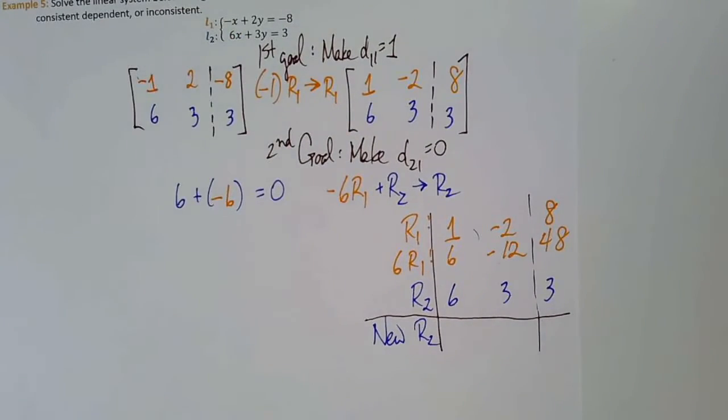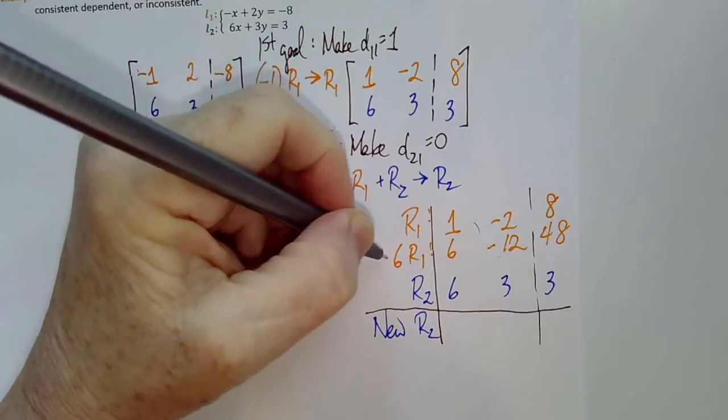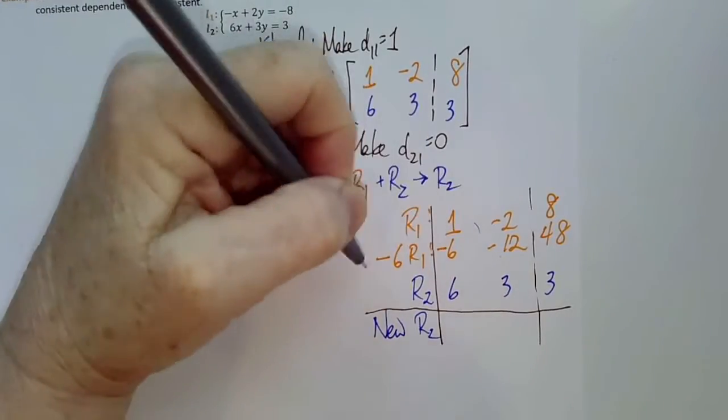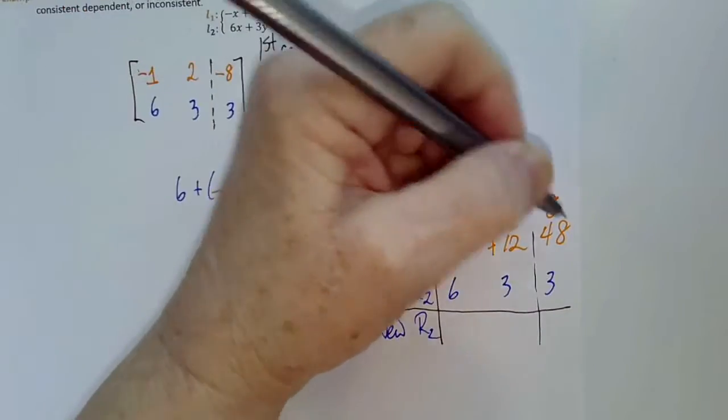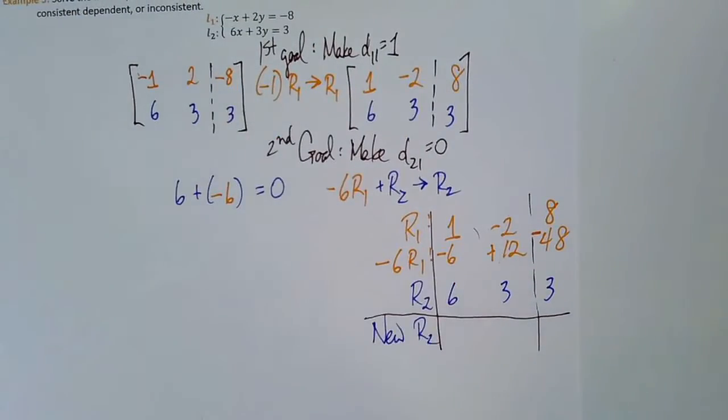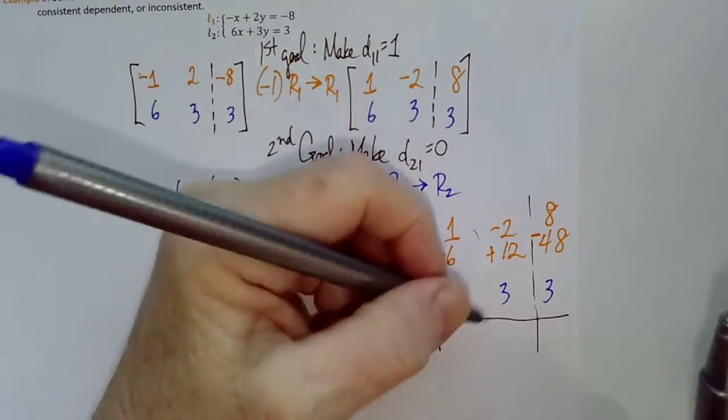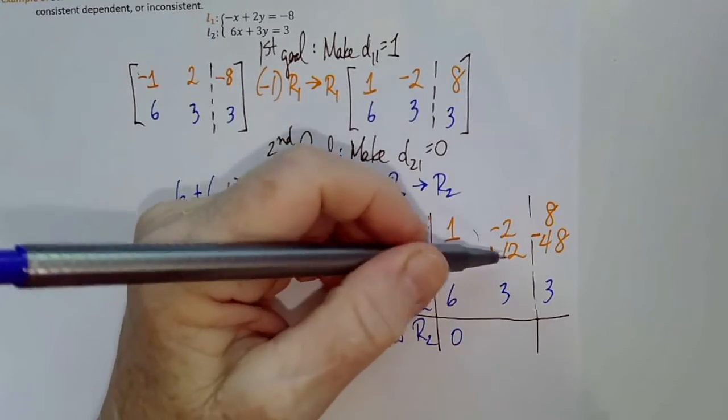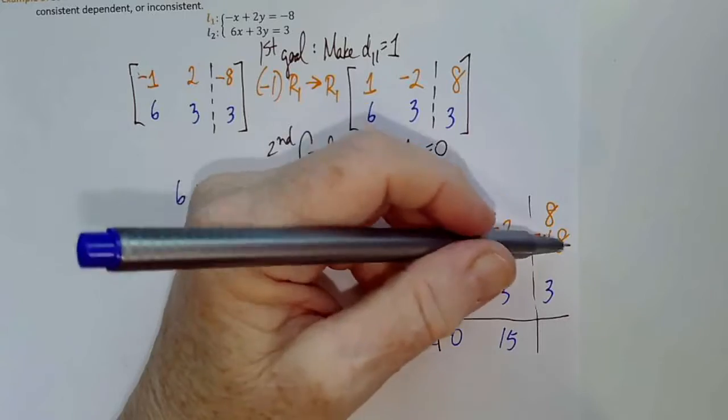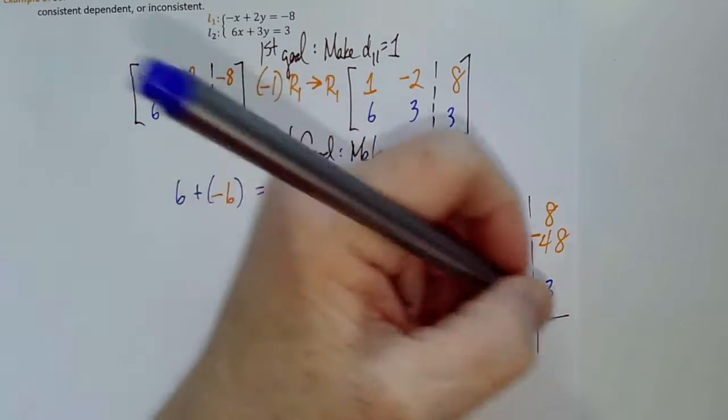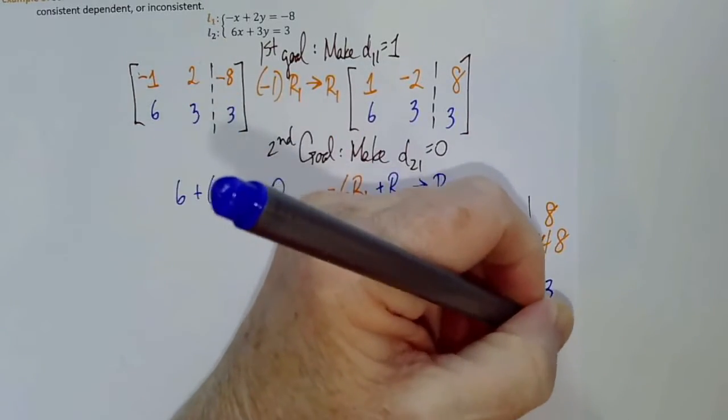We needed to multiply by negative 6. Negative 6 times negative 2 is positive 12, and negative 6 times 8 is negative 48. And now let's add: negative 6 plus 6 is 0, 12 plus 3 is 15, and negative 48 plus 3 is negative 45.